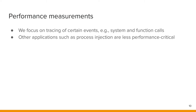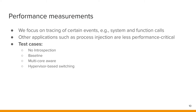Here we introduce our test cases. First, we performed measurements with no introspection occurring. Next, we employed the traditional approach used by frameworks such as libvmi. Then we have our unoptimized approach for process-bound and core-selective code injection on all processes. Next, we apply our optimizations for access violations and scheduler invocations. Then another optimization moves single-stepping into the hypervisor, just as we did with access violations and scheduler invocations.